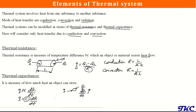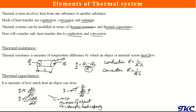To find thermal capacitance, c equals m times cp, where m is the mass of the object and cp is the specific heat capacity of that object. If we know the mass and specific heat capacity, we can determine the thermal capacitance. These are the two important elements we need to determine when modeling any thermal system.